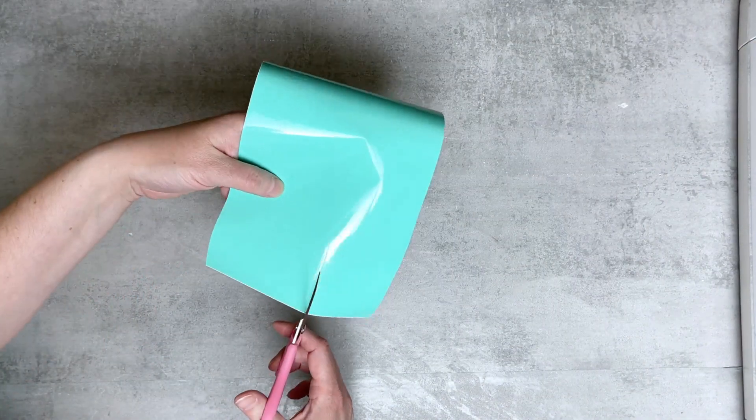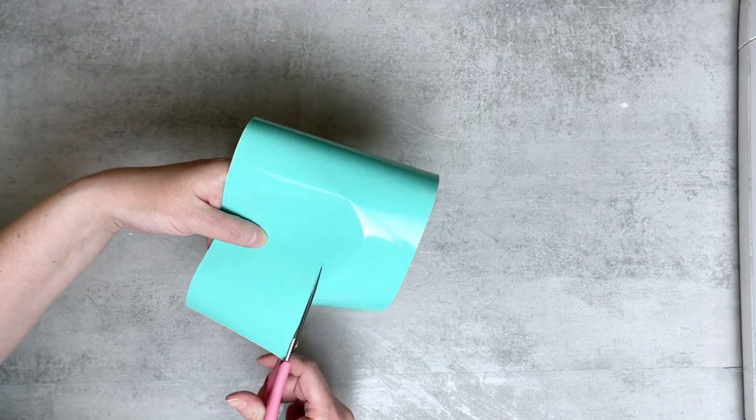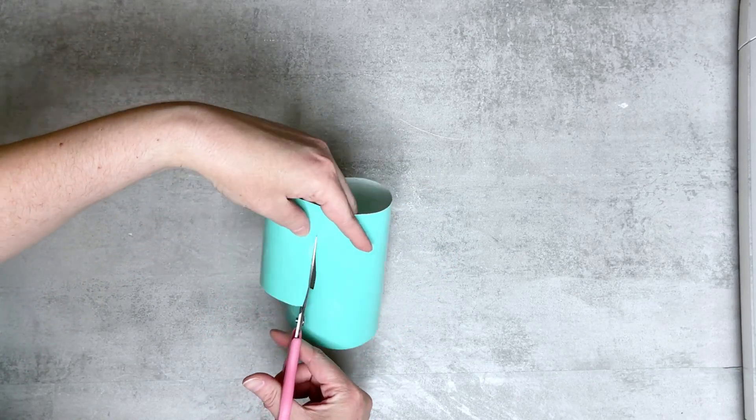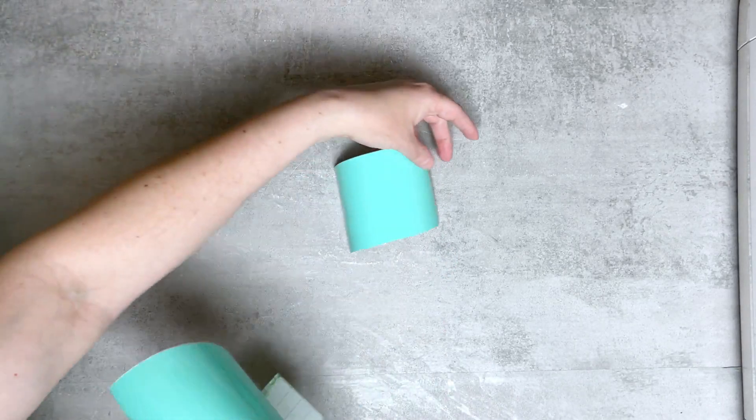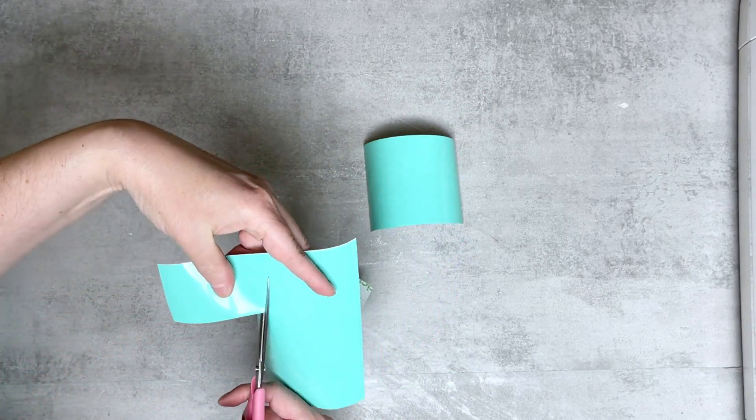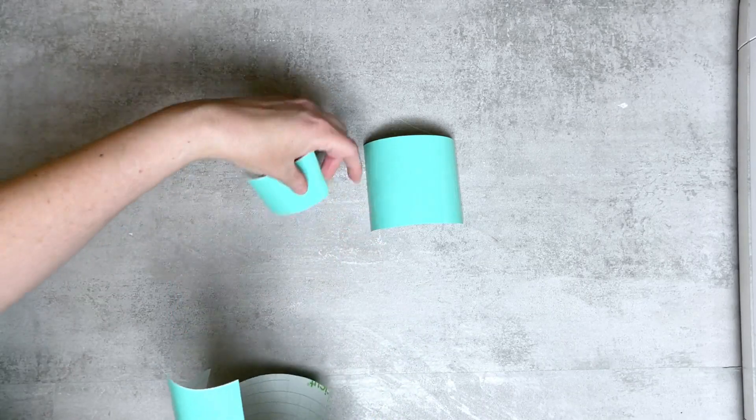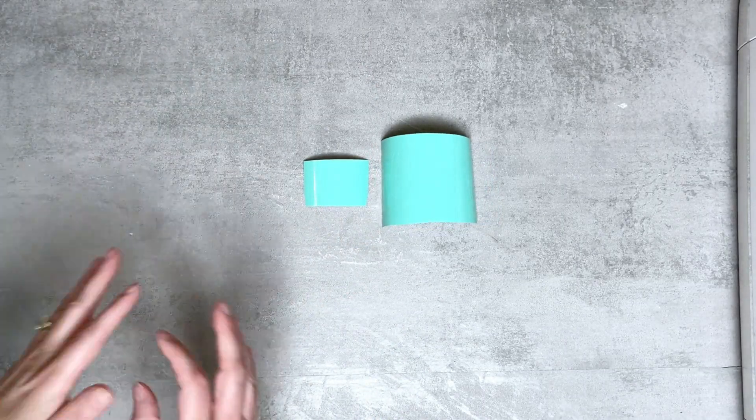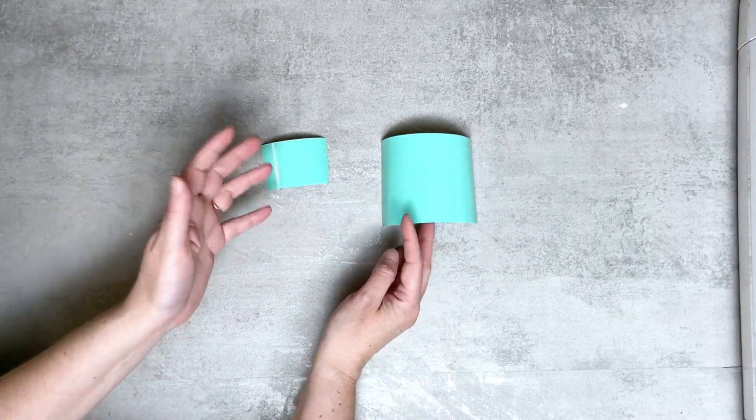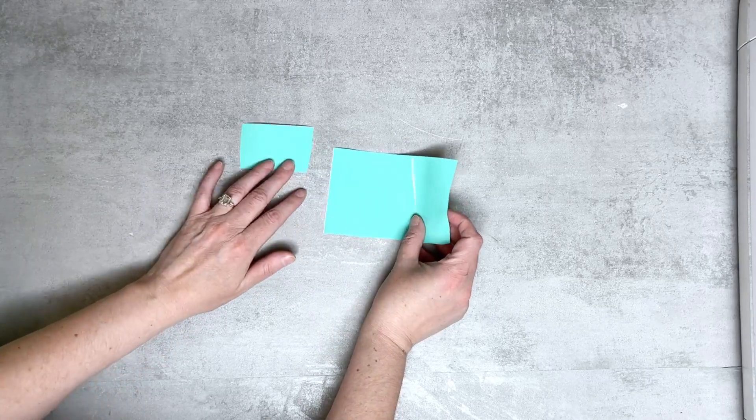I'm going to cut down our decal into the size that we need here. This is going to be applied in two separate parts. We're going to be applying the word sweet and then we'll be applying the word tea separately. This is great since we're working on a 3D surface. You want to make sure that you're working with as small of pieces as you can. If you're trying to apply a huge decal at the same time, it's a lot more difficult. This makes it a little bit easier.